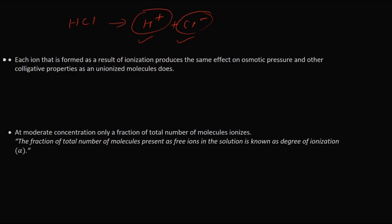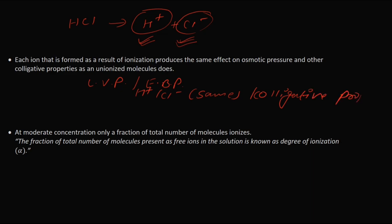The next postulate is: the H⁺ ion formed as a result of ionization produces the same effect on osmotic pressure and other colligative properties. The ions H⁺ and Cl⁻ formed by dissociating HCl will have the same kind of effect on colligative properties — such as lowering of vapour pressure, elevation of boiling point, Raoult's law, and osmotic pressure — as the electrolyte itself. This is the sixth postulate.